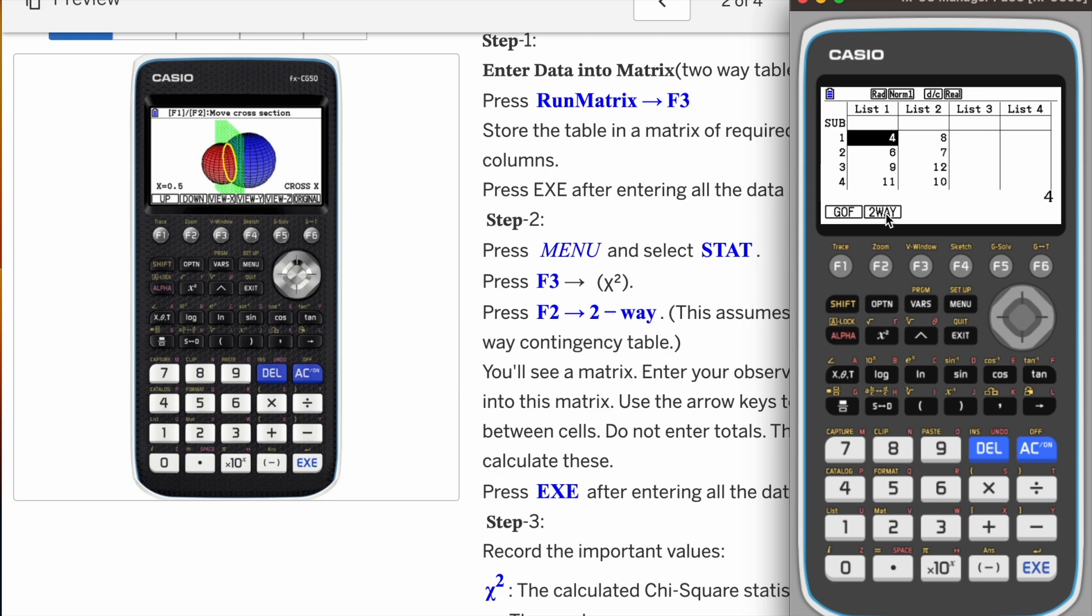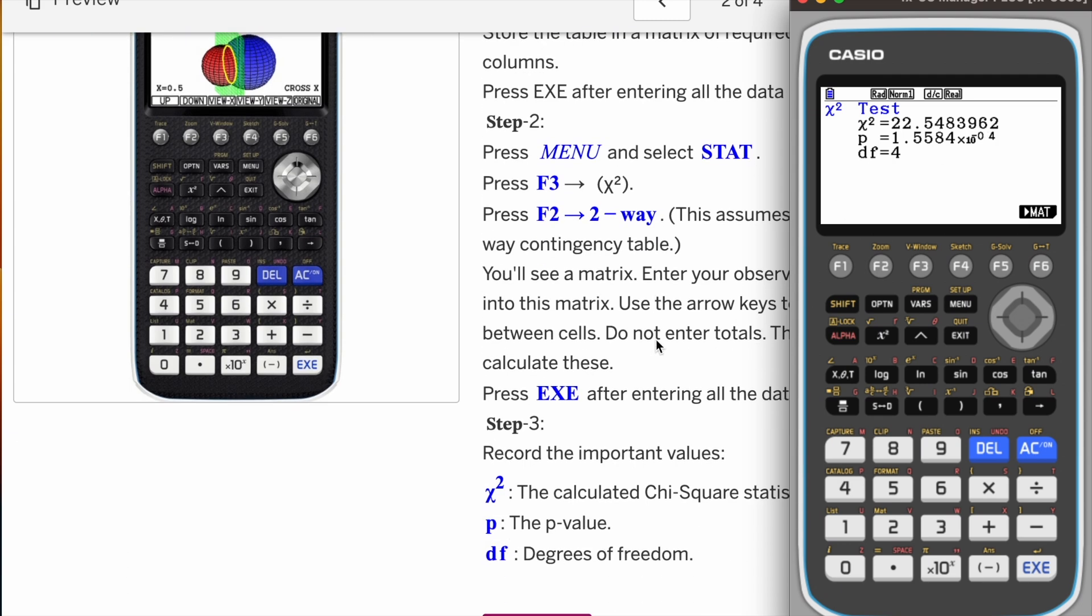Click on it and two-way. You can see F2 two-way, so you have to go to two-way. Finally, you will see observed matrix A, expected matrix B. The A matrix is what you have actually entered. Once it is done, come down and click on execute.